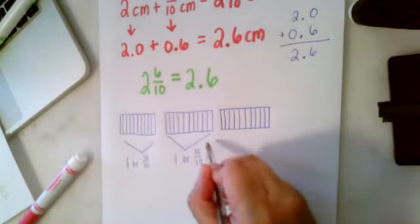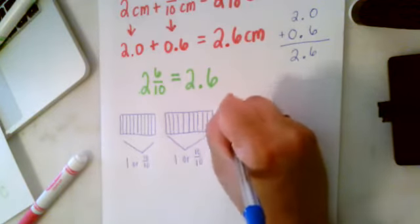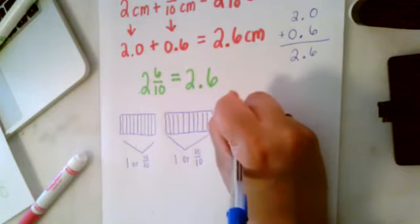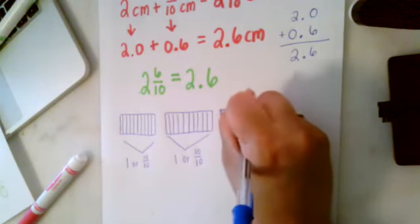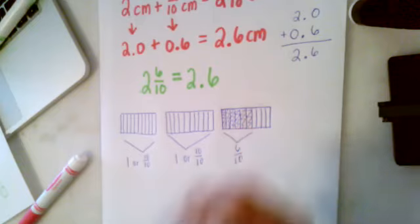6, 7, 8, 9, and 10. But this time, instead of the whole thing, we're only going to shade in 6 equal pieces. 1, 2, 3, 4, 5, and 6. So now we have 6 tenths.